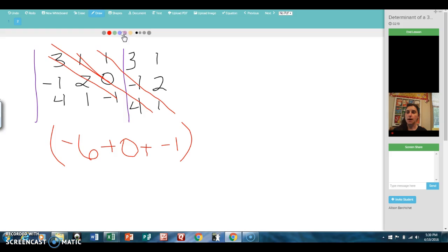Now I'm going to go in the other direction. Let's see. This guy. 4 times 2 times 1 is 8. Next one is a 0. Next one. Negative 1, negative 1, and 1 will be positive 1.